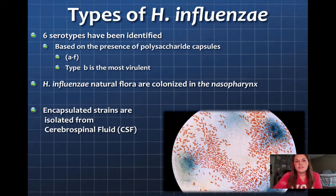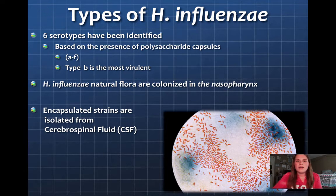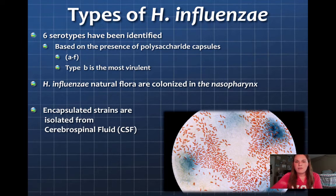There are six different serotypes of Haemophilus influenzae, and these are all categorized based on the presence of polysaccharide capsules. To distinguish them, they are named A through F, and type B is the most virulent, which is what we're talking about.